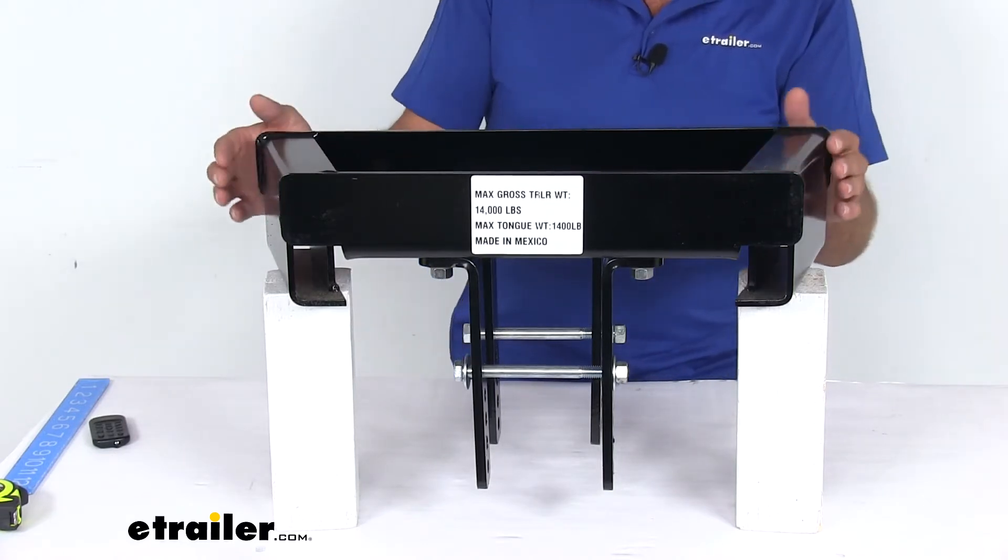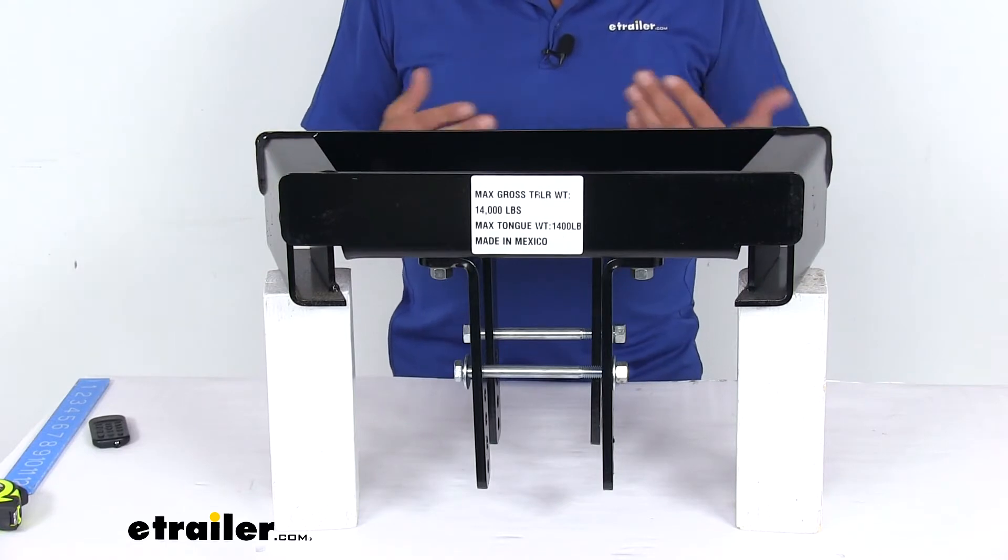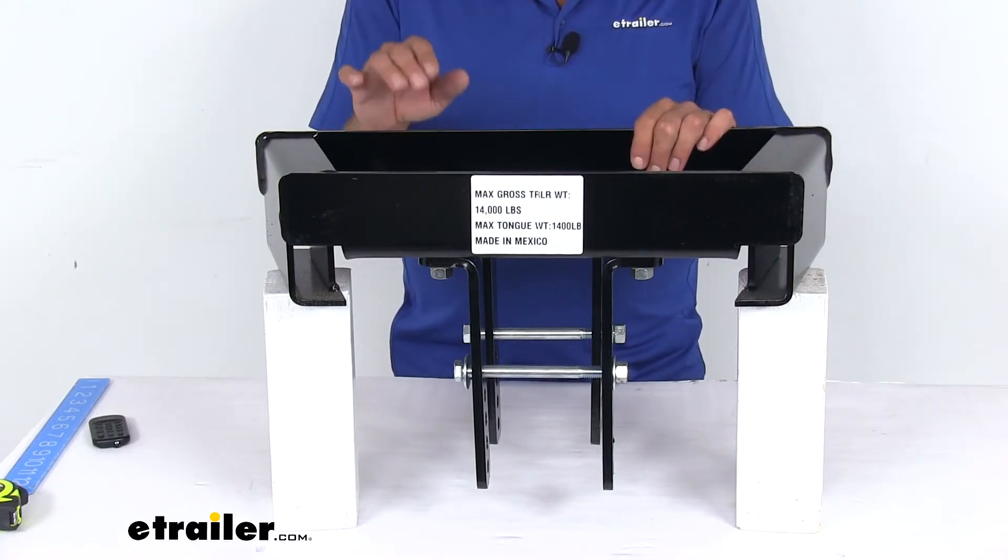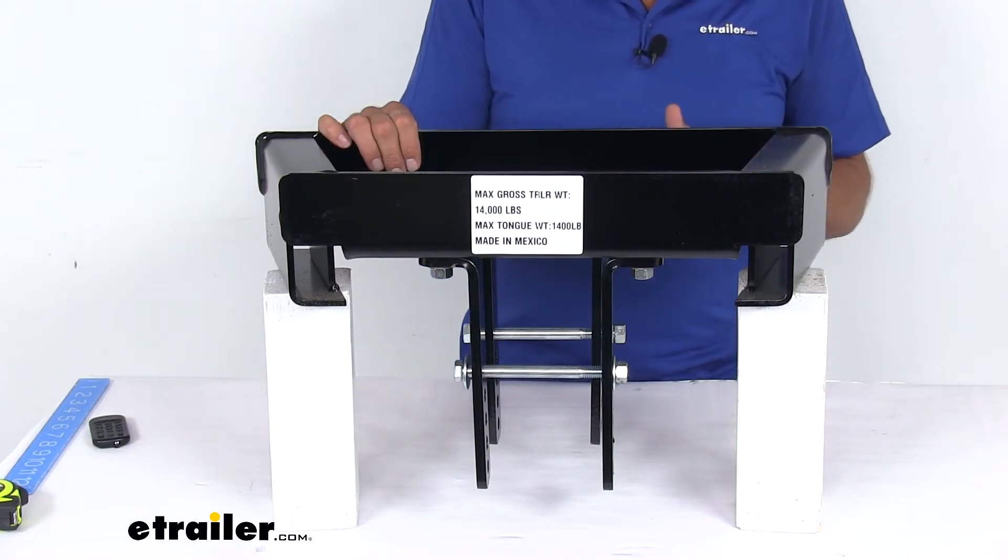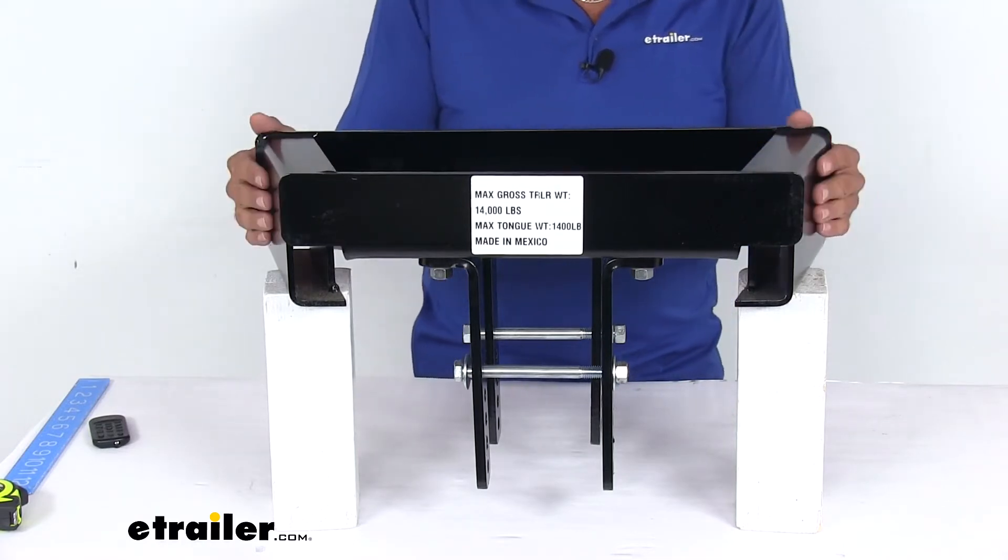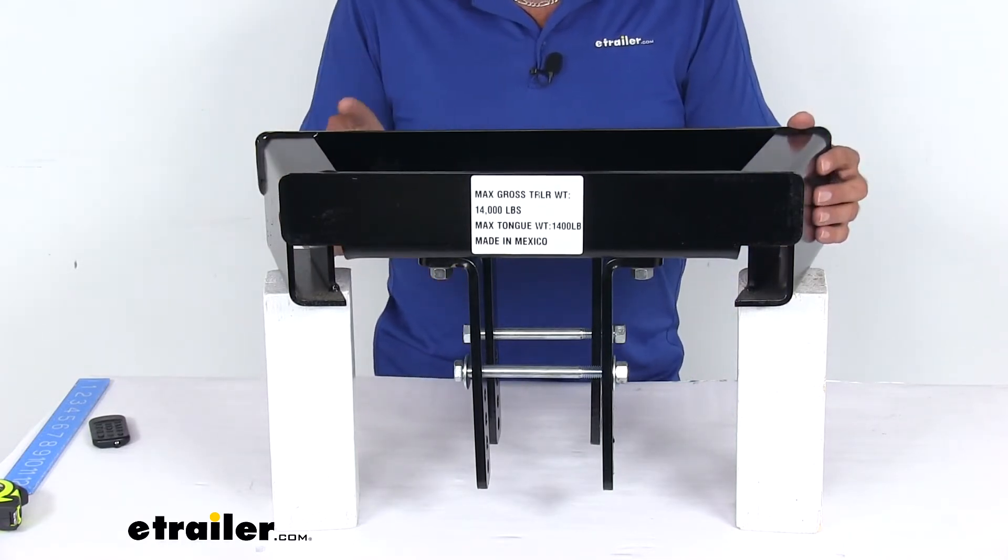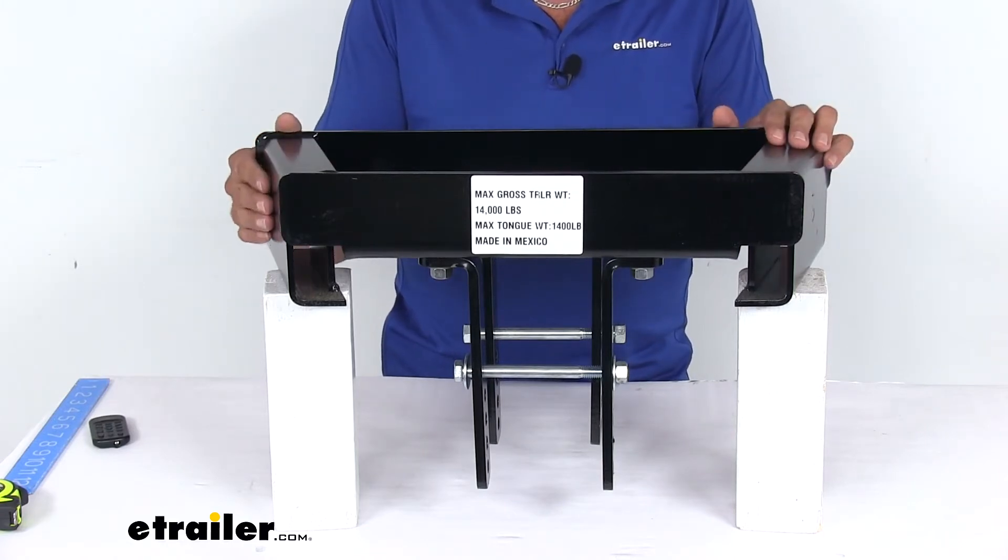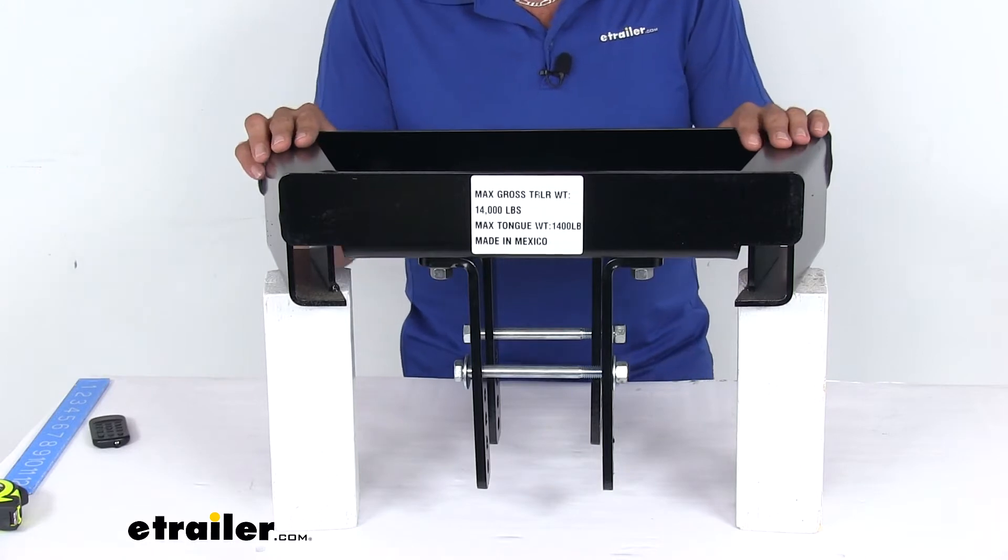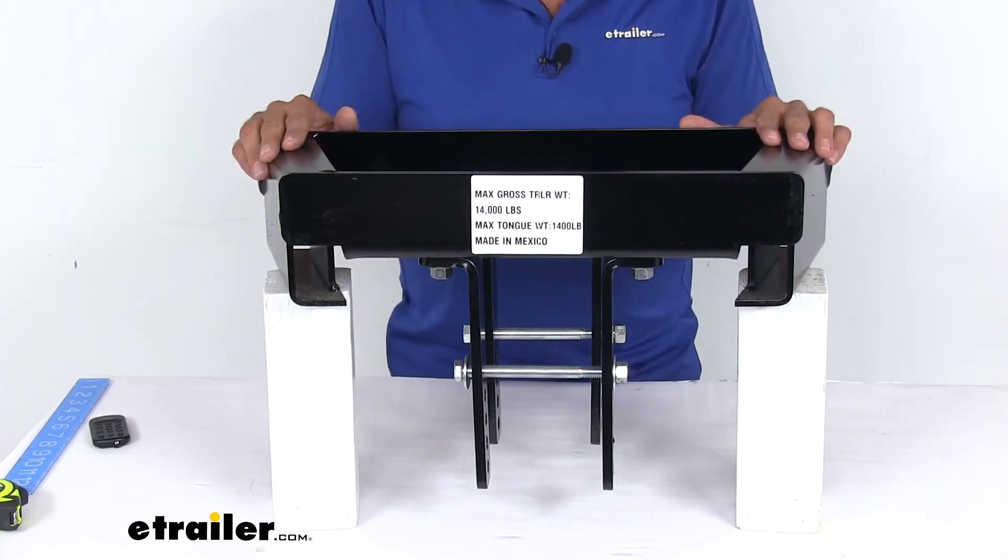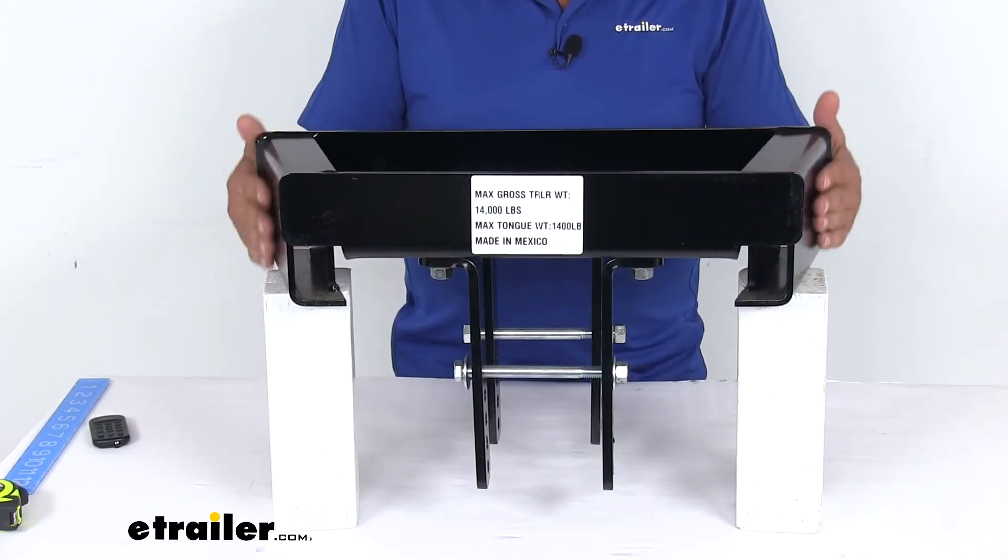It's going to work with most weight distribution systems, especially the ones from Reese: the round bar, trunnion bar, the SC weight distribution systems, and the Steady Flex. The only one they don't recommend using it on is the Straight Line weight distribution setup with the dual cam sway controls. That's a different sway control system and it's just not going to work on this setup.